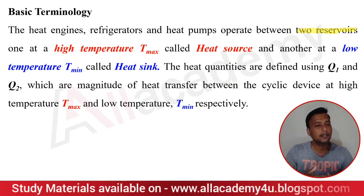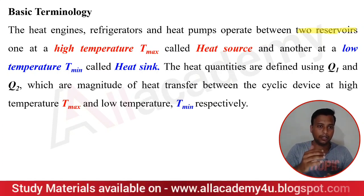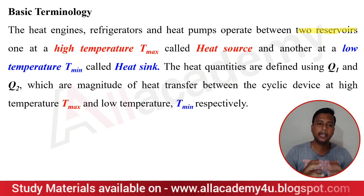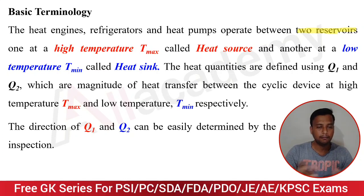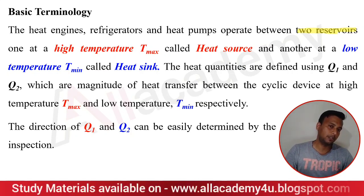The quantity of heat is defined using Q1 and Q2. Whatever heat interaction is taking place between the heat source, heat sink, heat engine, or refrigerator — those heat transfer quantities are considered as Q1 and Q2. Q1 and Q2 are the heat transfers between the maximum temperature reservoir and the minimum temperature reservoir respectively. The direction of Q1 and Q2 can be easily determined by the inspection method.